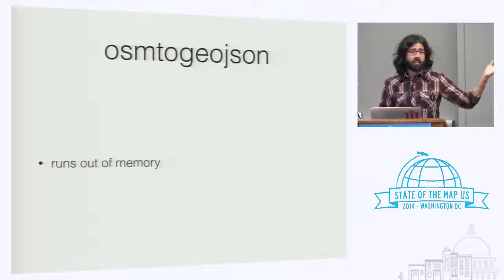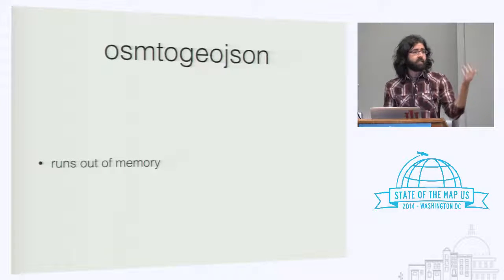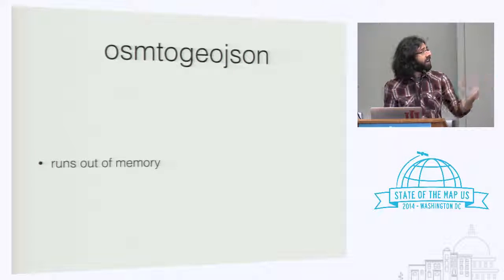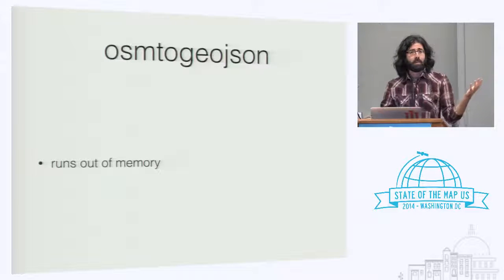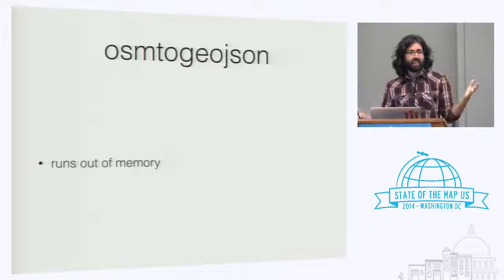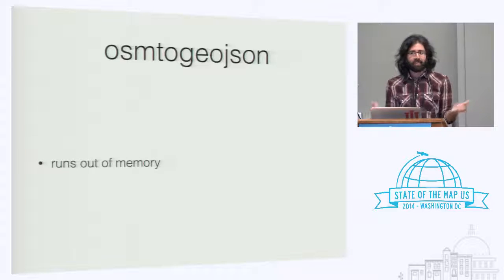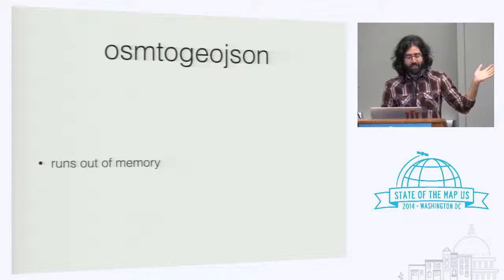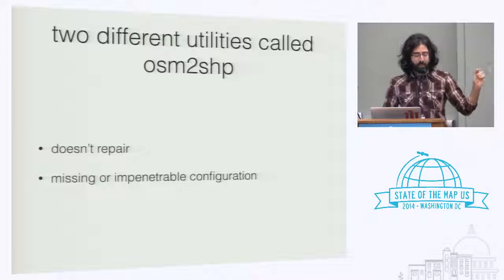OSM to GeoJSON is in Node. It looks great and it's well maintained. But it just runs my machine out of memory — I gave it 8 gigs, I gave it 12 gigs, and I think at some point I'm hitting a Node 64-bit limit where it won't give it more memory. OSM to GeoJSON does not work.